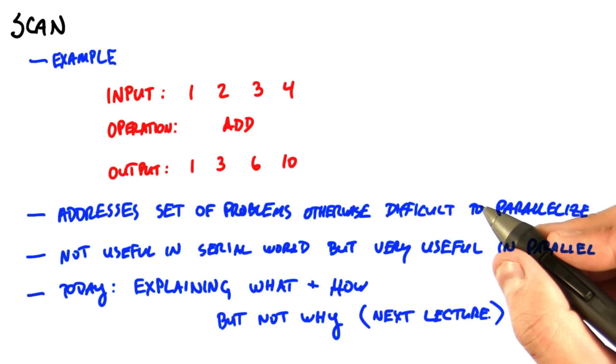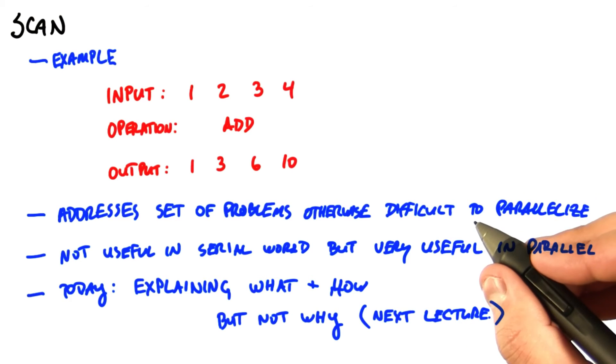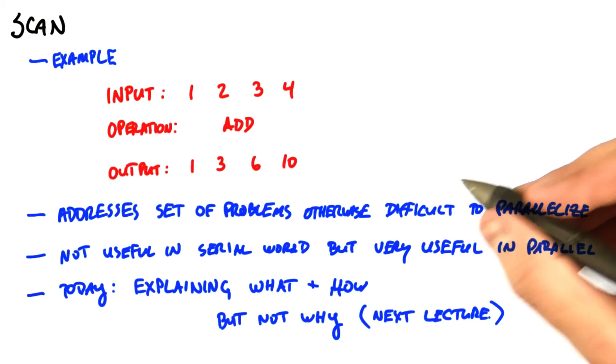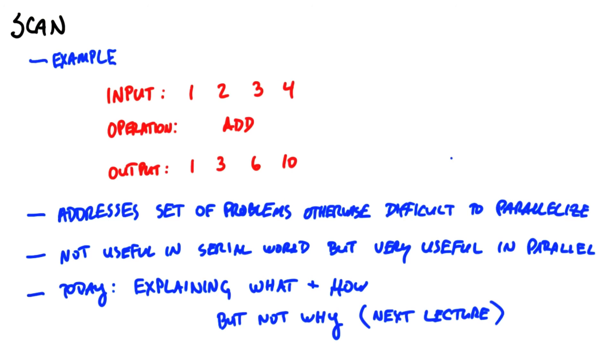Now, there's lots of uses for scan, with compaction and allocation being two of the most popular. Later in this lecture, we'll discuss histogram, which uses scan, and our research group has used scan for quicksort, for sparse matrix computation, and for data compression, among others. It's a very useful parallel primitive.